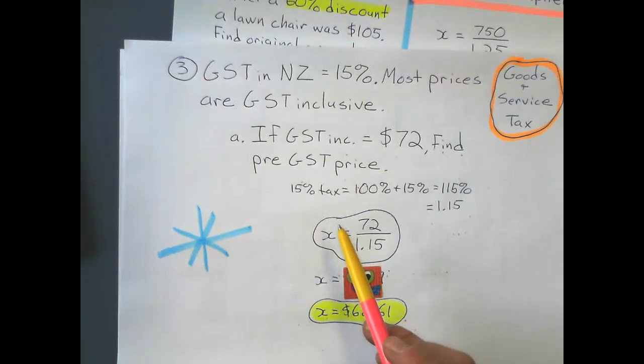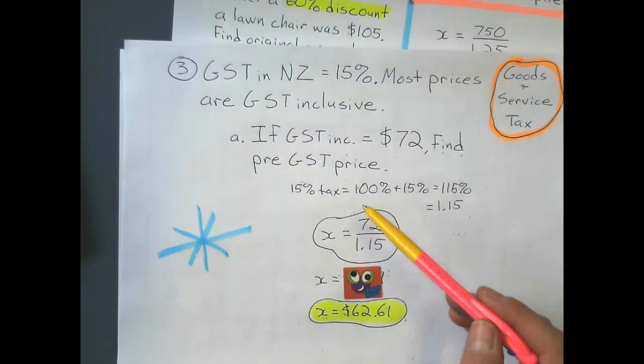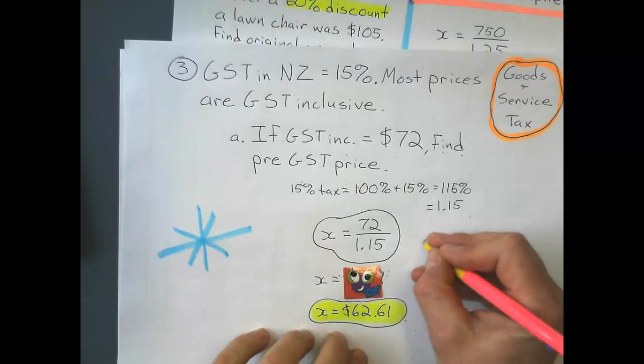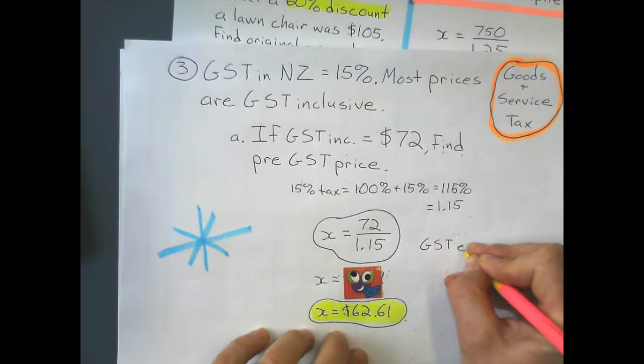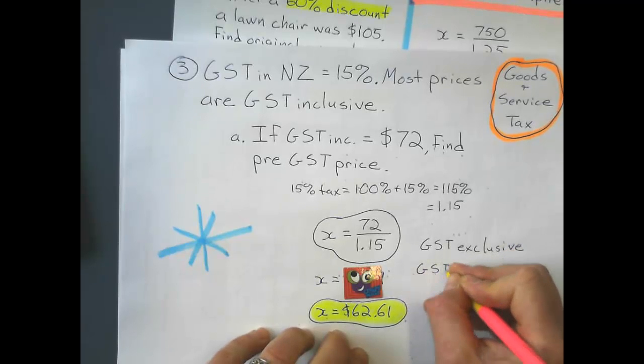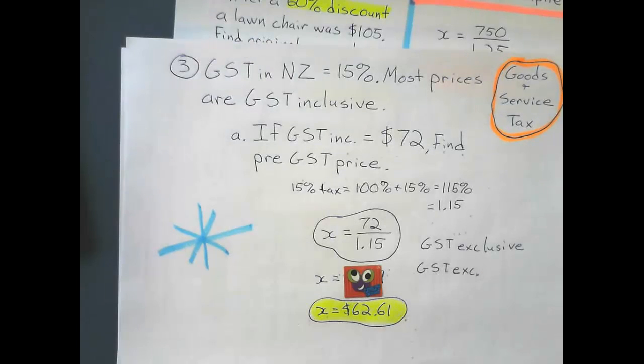And these tax problems, it's not going to change. A tax is always going to be an increase. So if we see something like this, and it says find the original price, or find the pre, actually it's also called GST exclusive. And that means without GST or pre-GST. We see that sometimes as well.